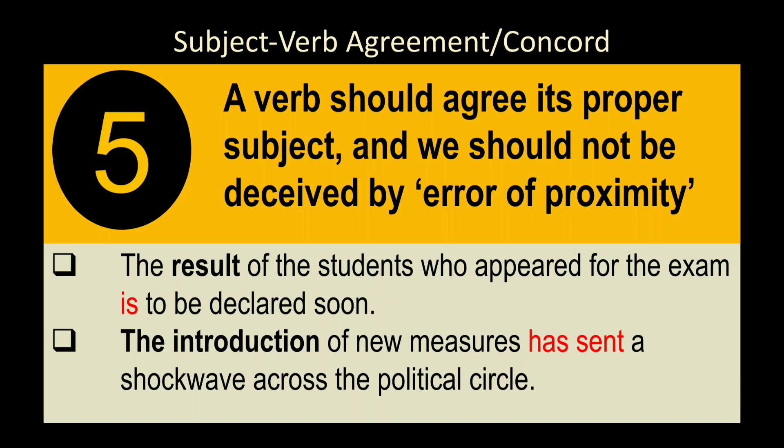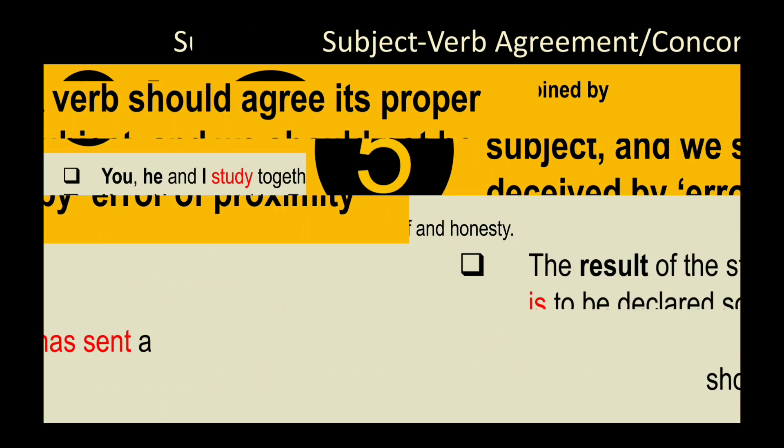'The result' is quite far from the verb 'is,' which can cause mistakes. Another example: 'The introduction of new measures has sent a shock wave across the political circle.' 'New measures' is not the subject — our actual subject is 'the introduction,' which is singular, and that is why we use 'has' and not 'have.' We must identify the correct subject.